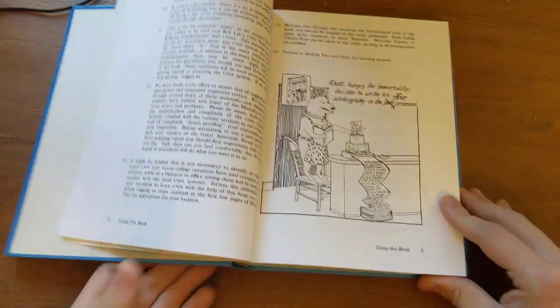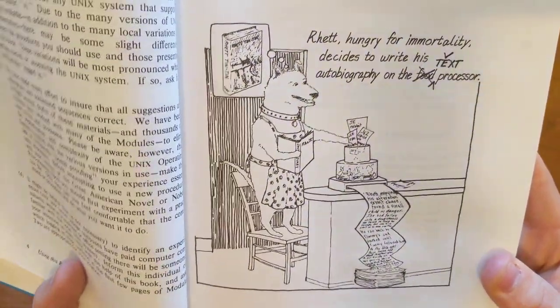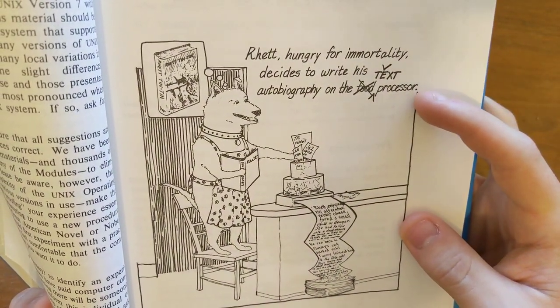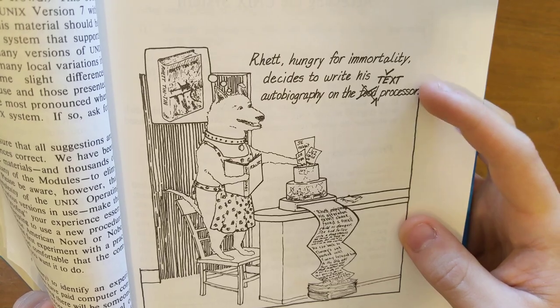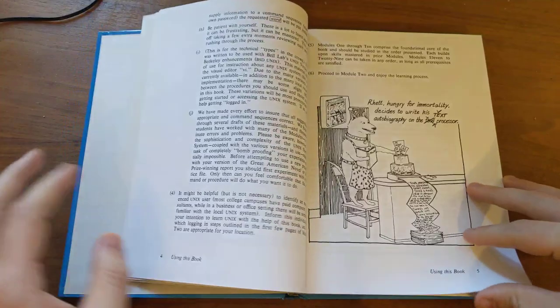So, oh, and here's, they have these cutesy little diagrams or art stuff all over the place. Rhett, hungry for immortality, decides to write his autobiography on the text processor. And you can see he's using, like, Roff macros and stuff like that.